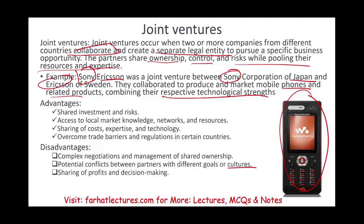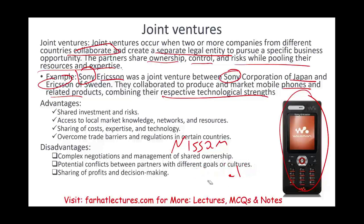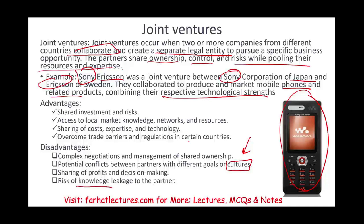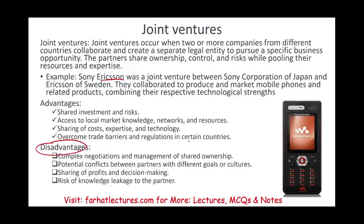Disadvantages of joint ventures include complex negotiation and management of shared ownership, and potential conflict between partners with different goals or cultures. A good case study is Nissan and Renault: they formed a joint venture and appointed CEO Carlos Ghosn, originally from Lebanon, but significant cultural differences between the French company and his management style created major problems. Also, sharing decision-making is difficult. There's also a risk of knowledge leakage to the partner, since you have to share sensitive information — and that information could leak.